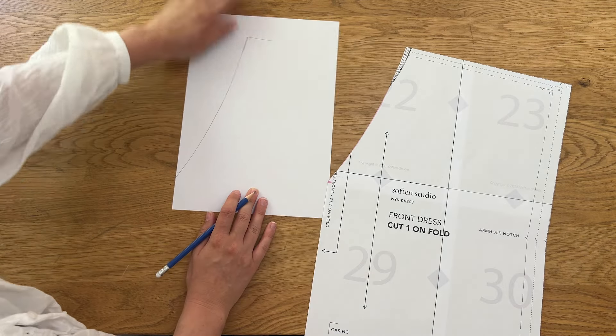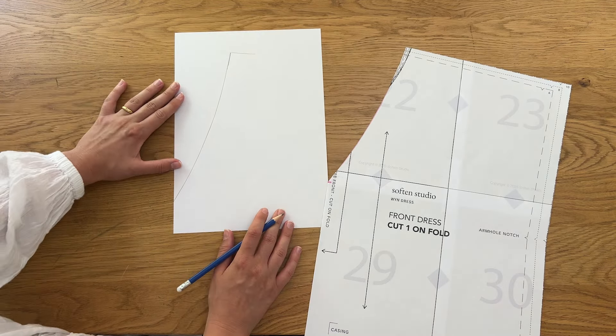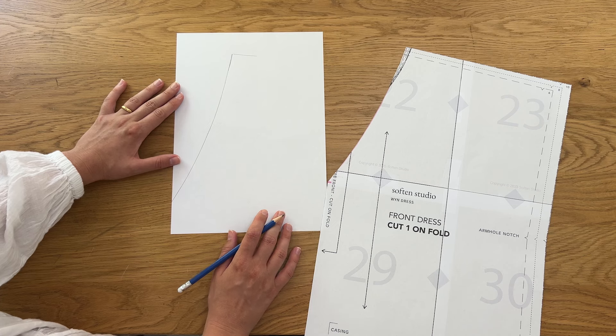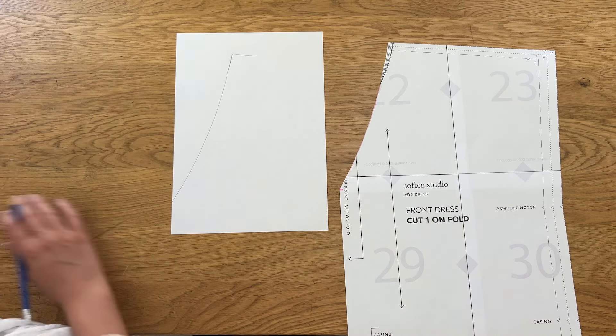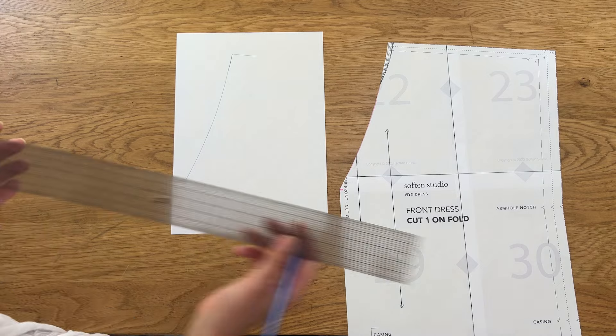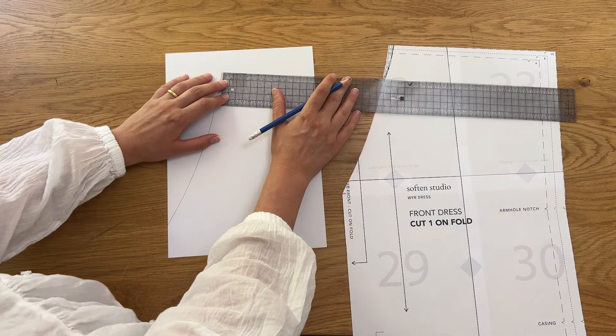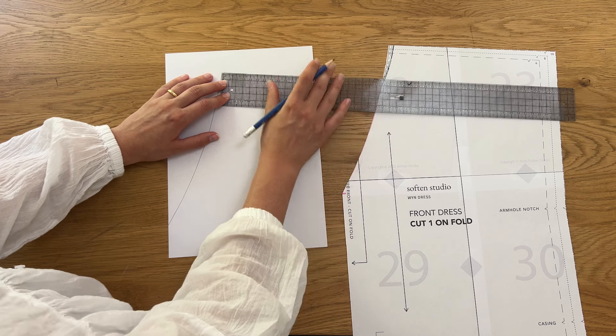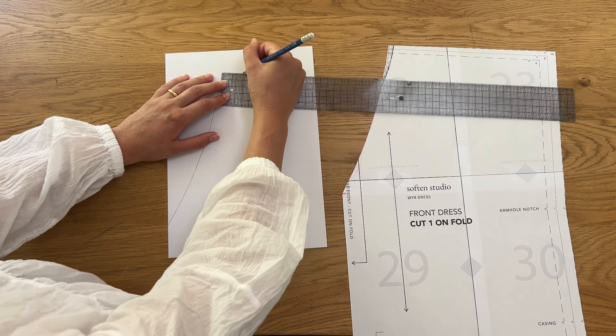Next you'll decide on how wide you'd like your facing to be. For this tutorial I decided to make my facing three centimeters wide but after I finished I decided I liked the look of a smaller facing and changed it to two centimeters. It's up to personal preference but the method is the same.